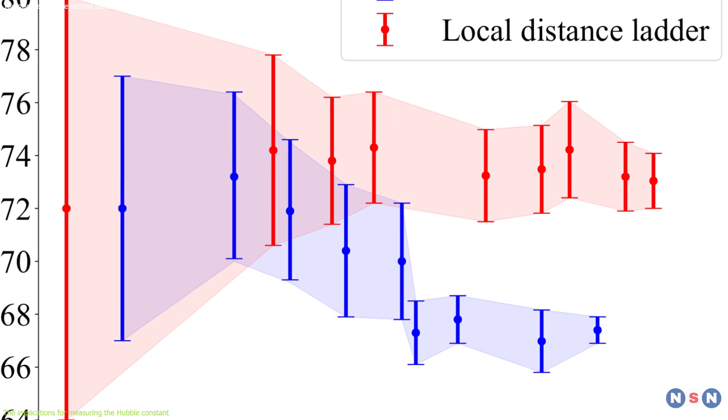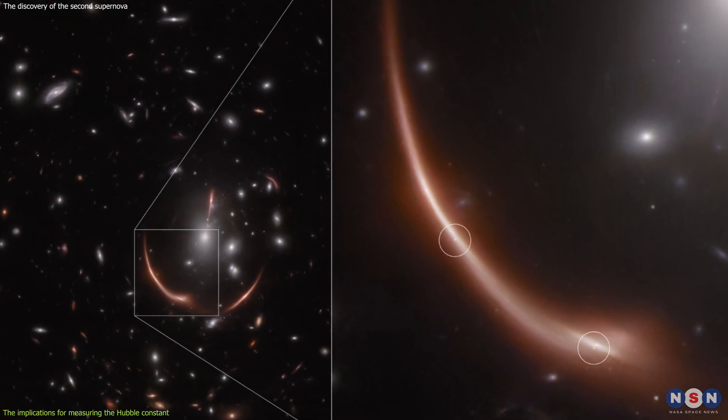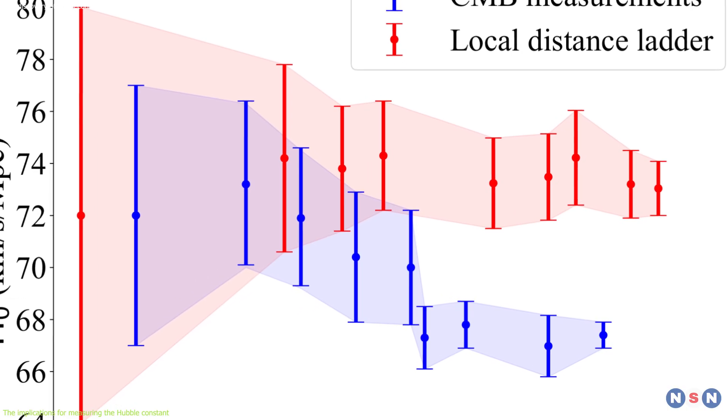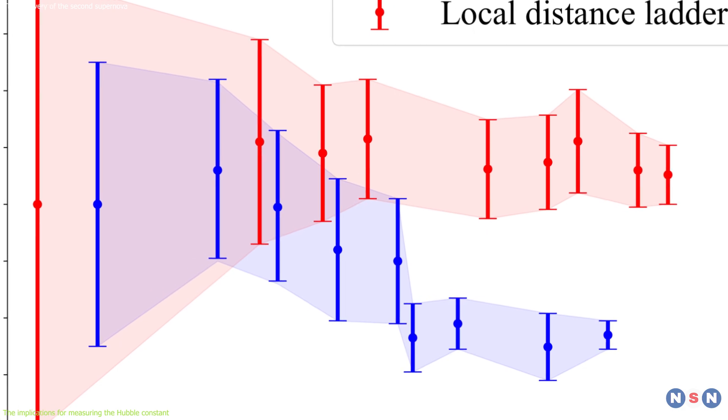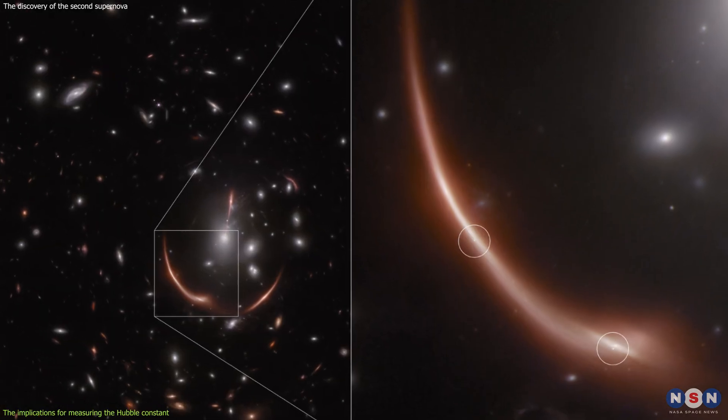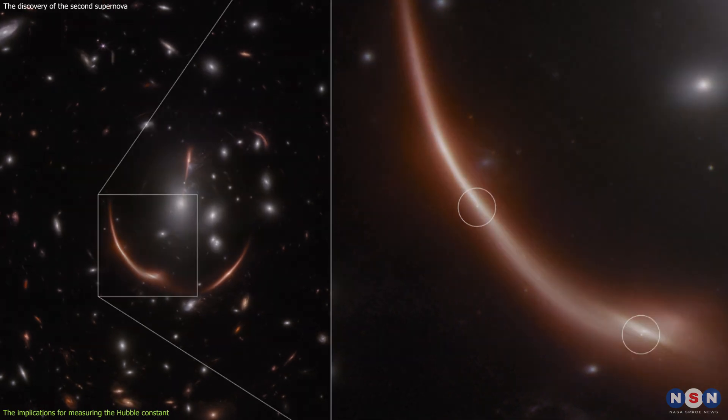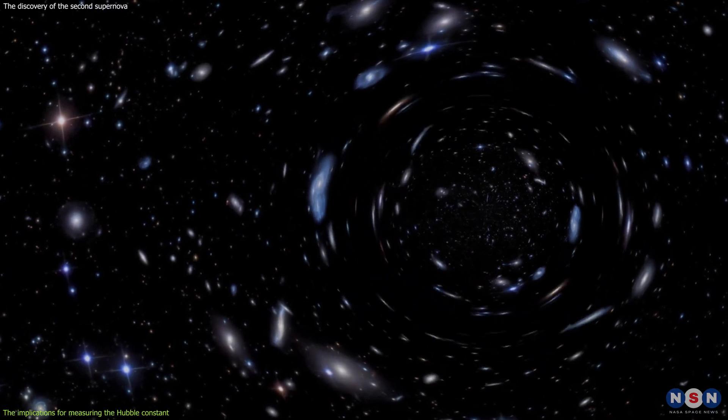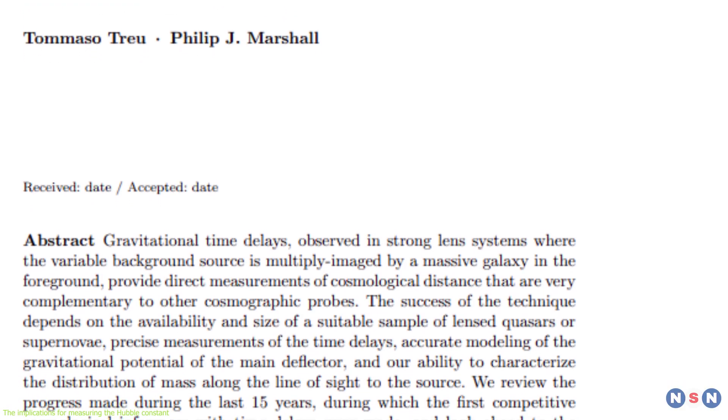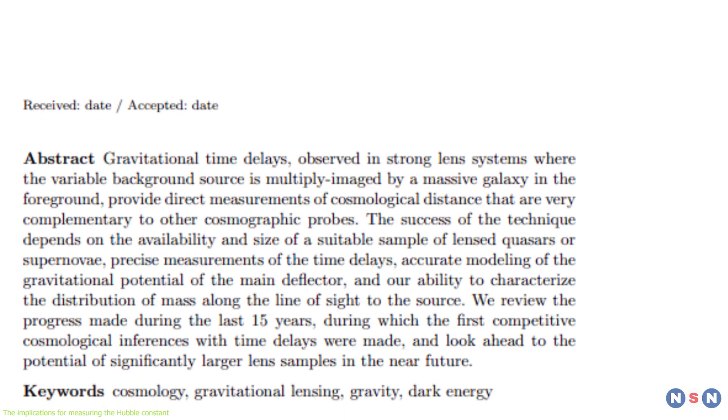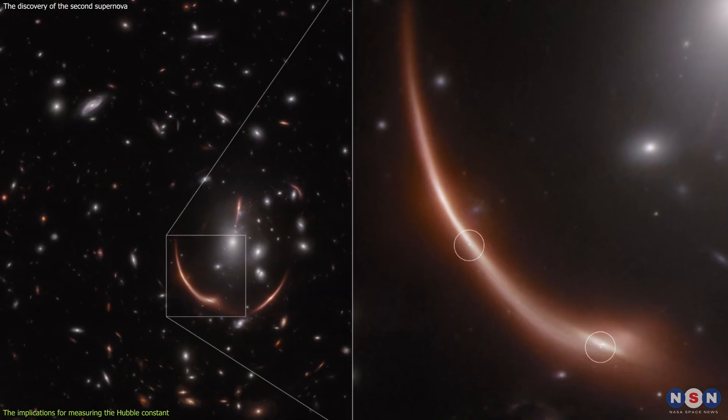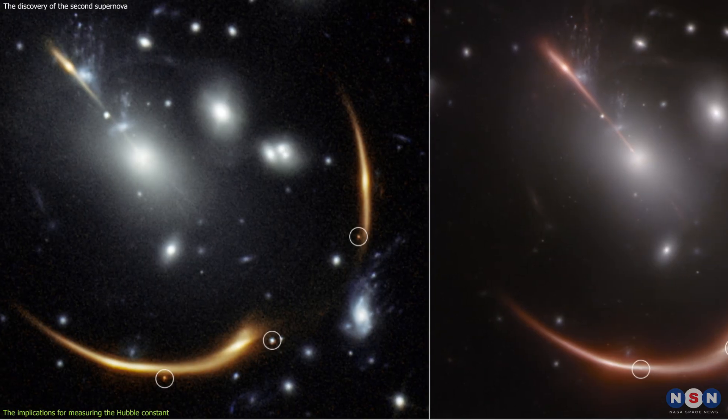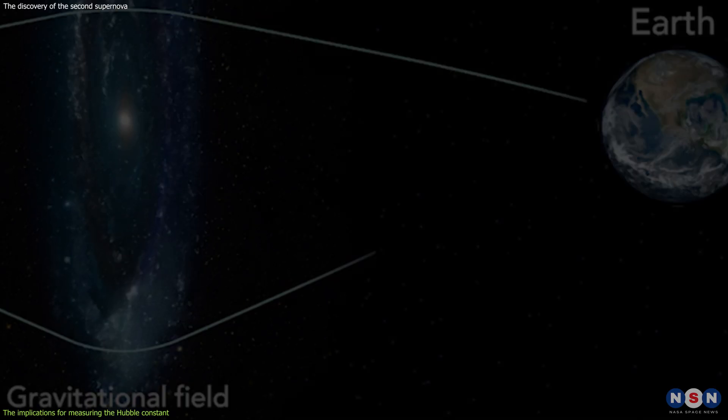So, how can this particular supernovae help us measure the Hubble constant, and possibly resolve the tension between the CMB and the cosmic distance ladder methods? Well, this supernovae can be used as a new type of standard candle, which does not depend on the cosmic distance ladder, but on the gravitational lensing effect and the time delay. This method is called time delay cosmography, and it works like this. By measuring the brightness and the spectra of the supernovae in different images of the galaxy, we can determine their intrinsic luminosity and their type.